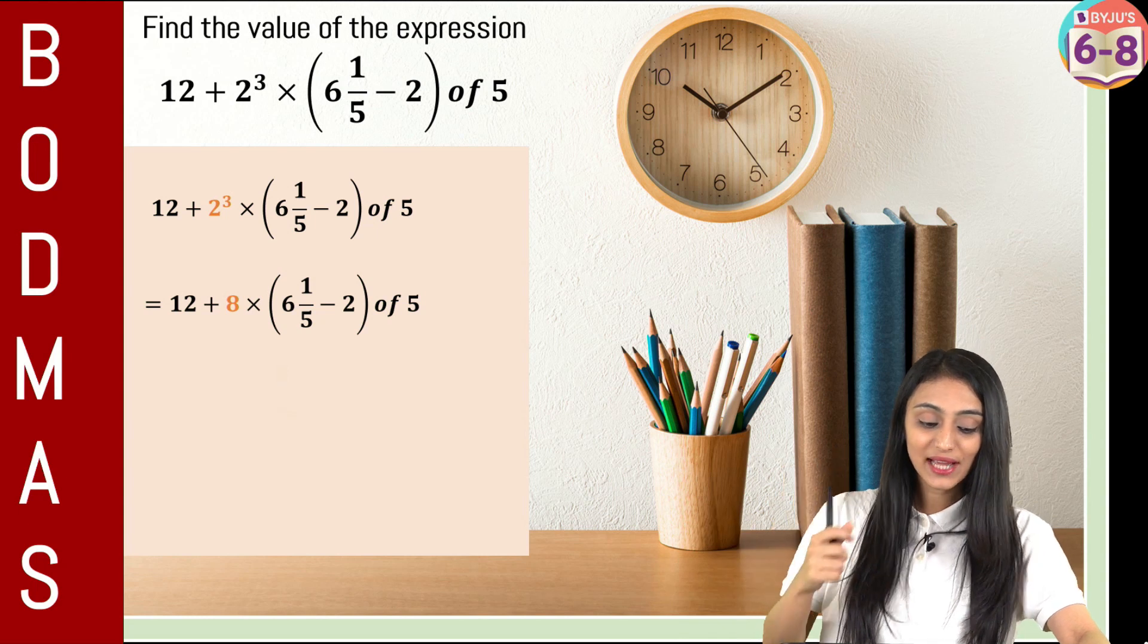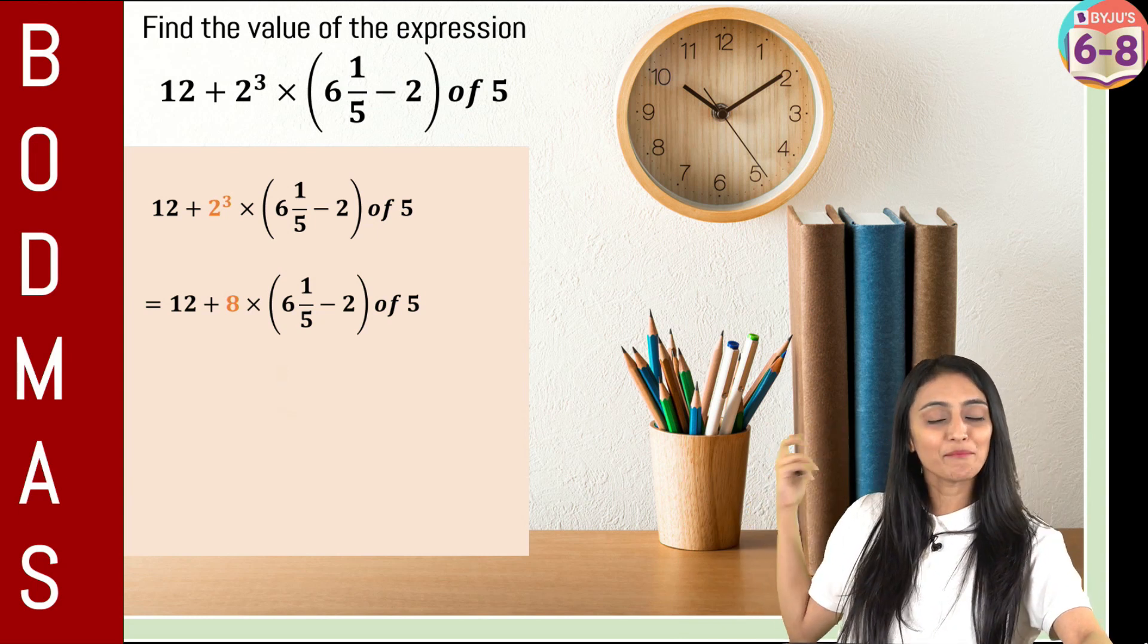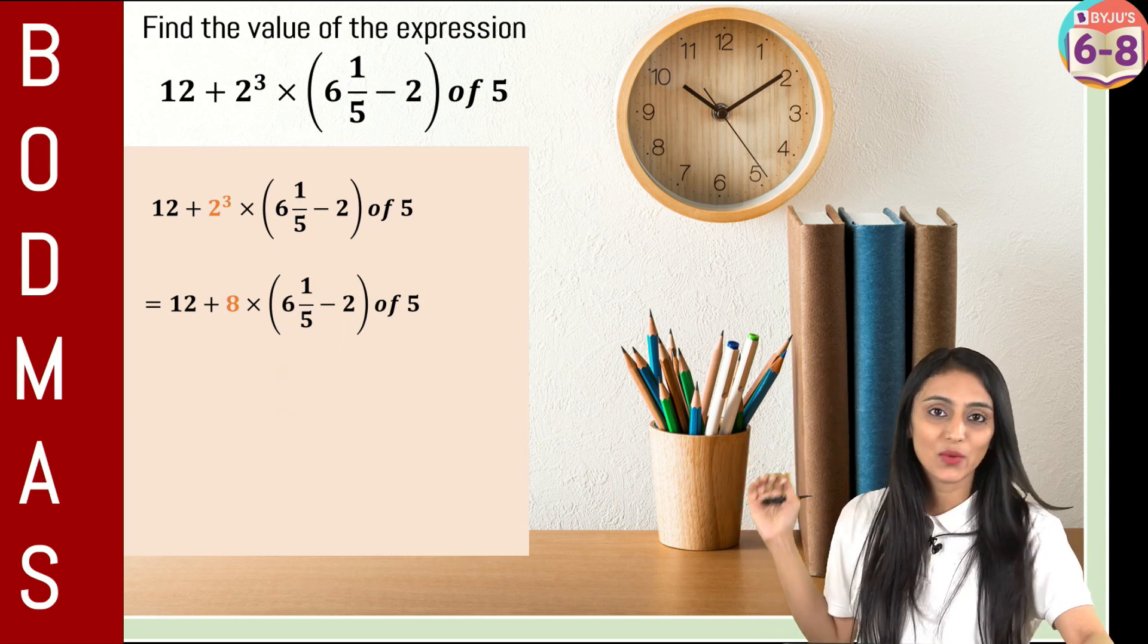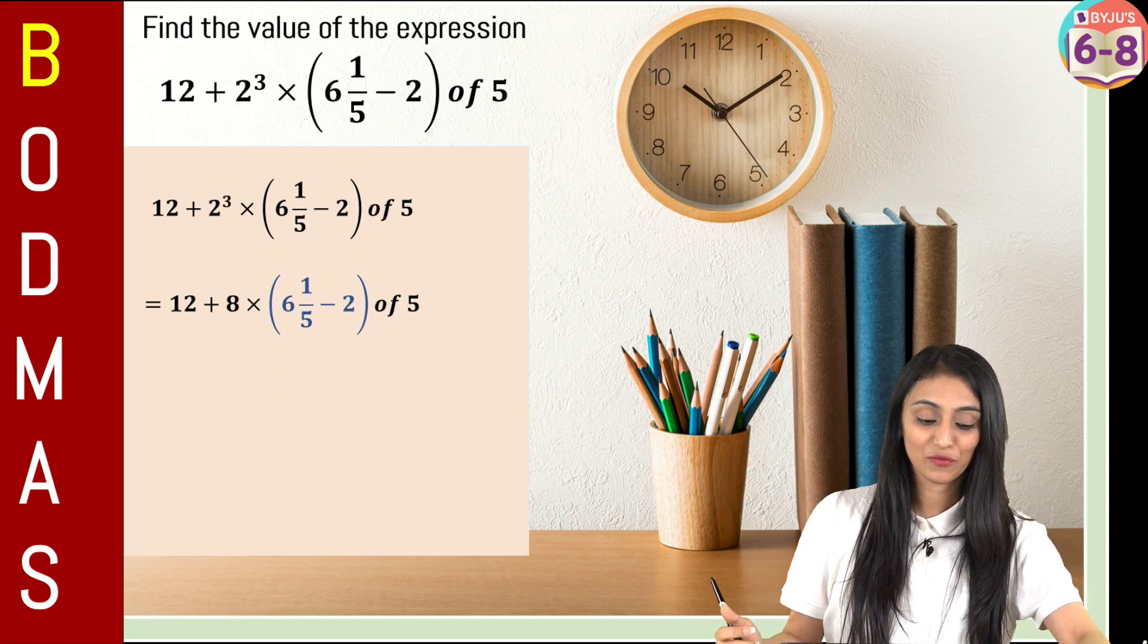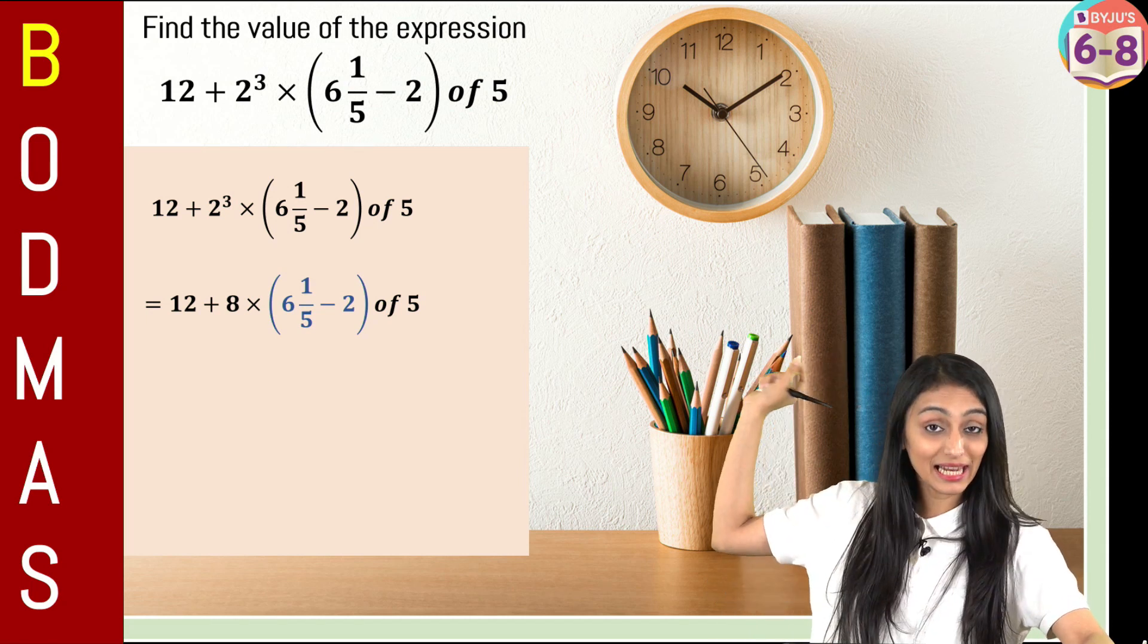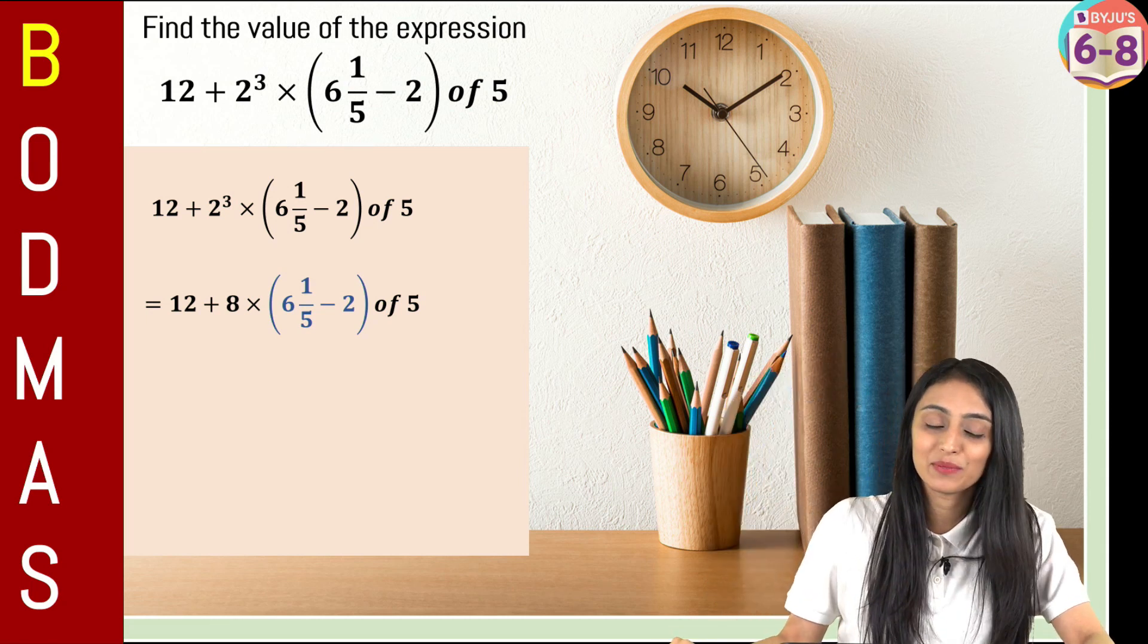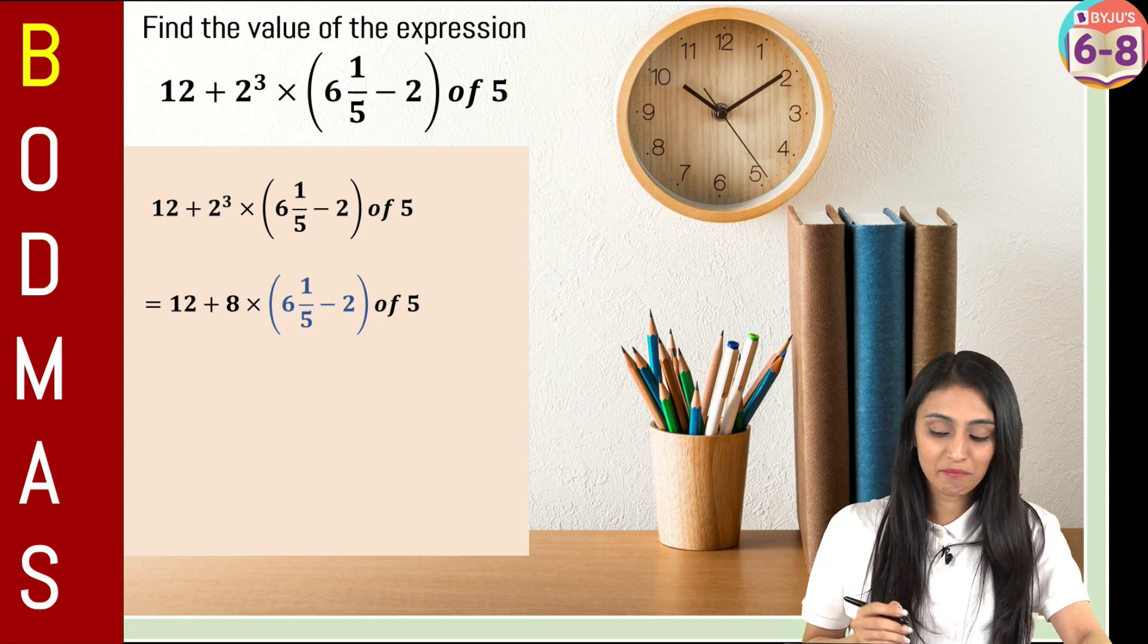Now after that we have this plus sign here, we have multiplication, we have bracket and off. So BODMAS is going to help us in this thing. Like where to start from? So we can see a bracket over here and B is the first letter over here. So we will simplify this bracket first. So 6 and 1 by 5 minus 2.